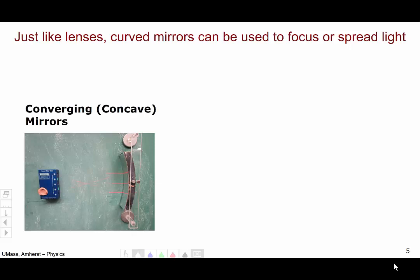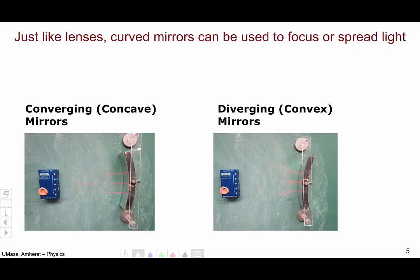Mirrors come in two basic shapes. We have concave mirrors such as this mirror on the left, which has a concave shape bending towards the light source. Or we can have a convex mirror that curves away from the light source.